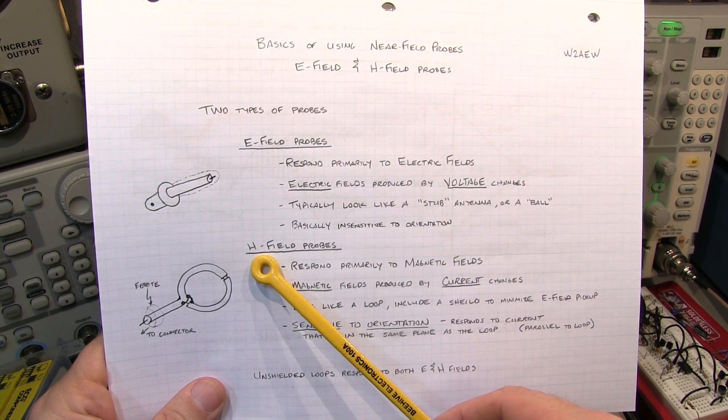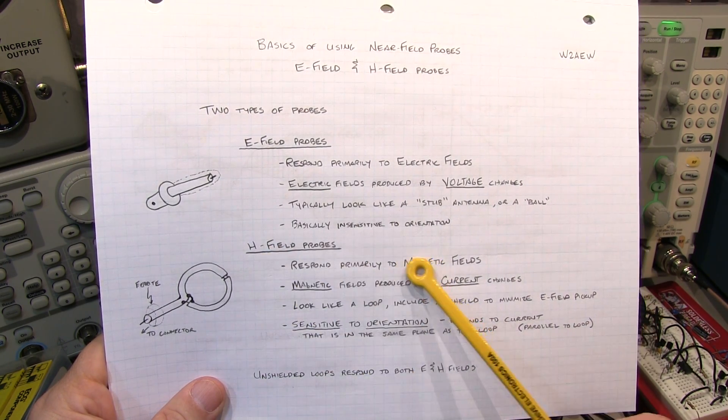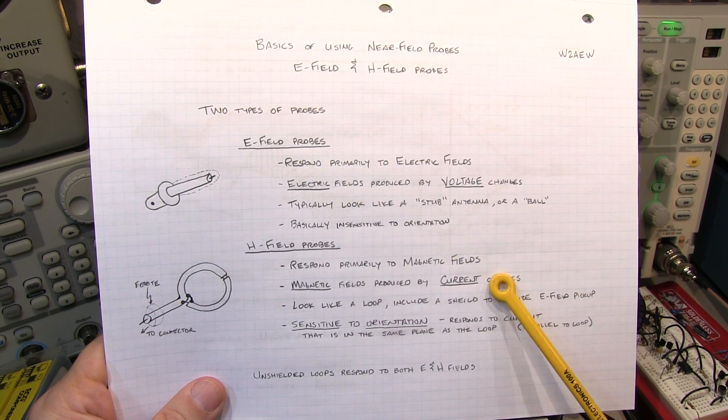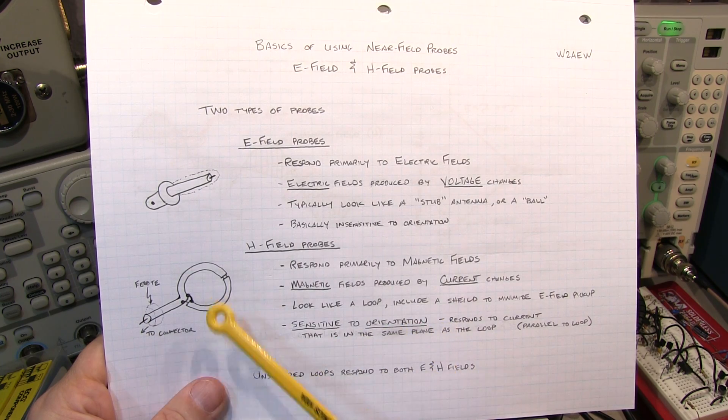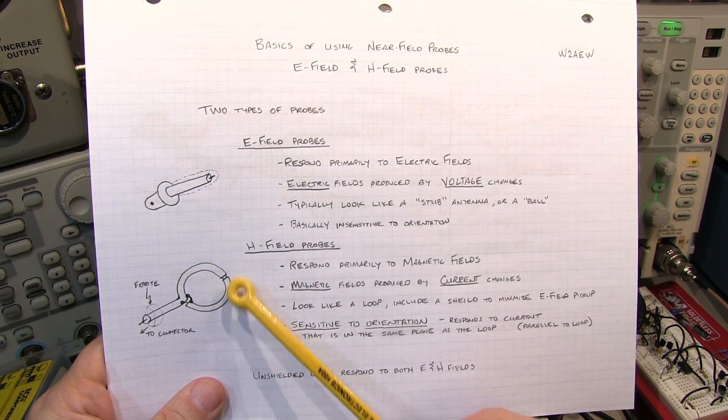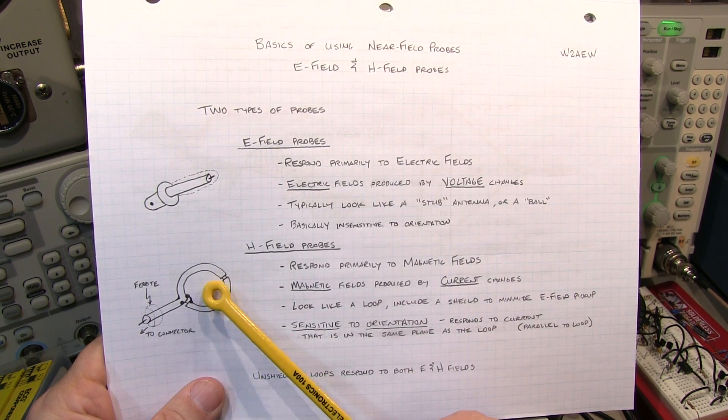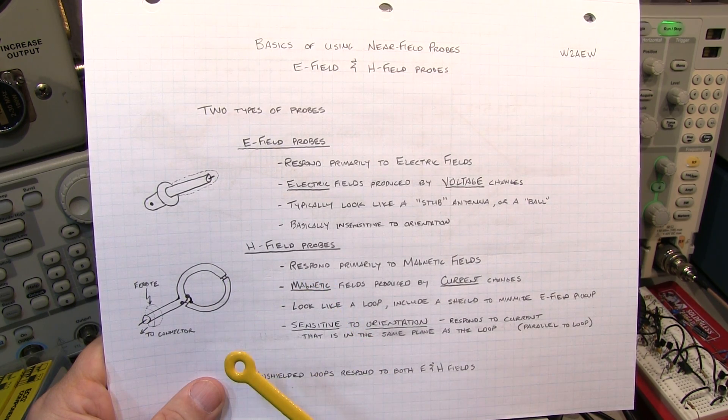Now the H field probes respond primarily to magnetic fields. Magnetic fields are produced by current changes in a circuit as opposed to voltage changes. They often look like a loop, and they're shielded to minimize the E field pickup. So they'll respond primarily just to the magnetic field changes.